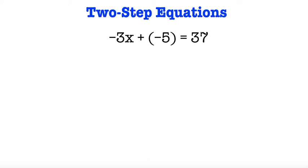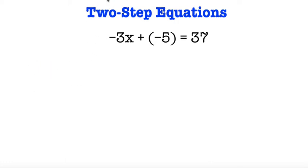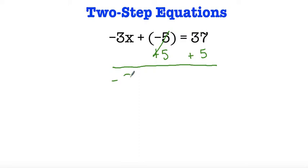So in the next problem, I have negative 3x plus negative 5 is equal to 37. And same thing — our goal is to isolate our x to find the value of x. Since I'm adding a negative, in order to get rid of this negative 5, I could add 5 to it. Because negative 5 plus 5 is equal to 0 and they cancel each other out. So if I want to get rid of this negative 5, I have to add 5. Don't let the plus sign confuse you. So if I add 5 to the left side, I have to add 5 to the right side.